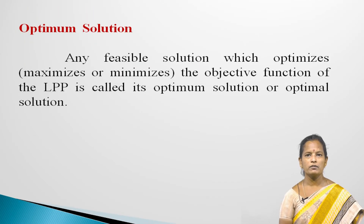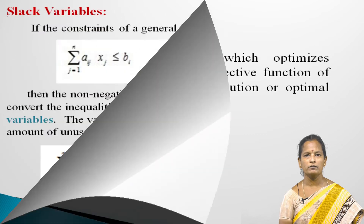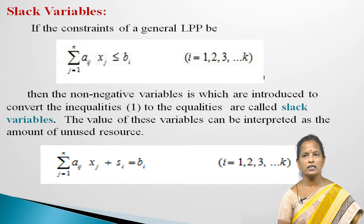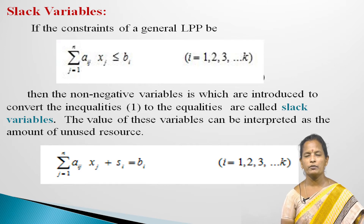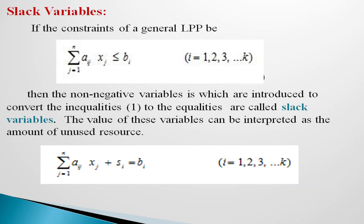Optimum Solution: Any feasible solution which optimizes — that is, maximizes or minimizes — the objective function of the LPP is called its optimum solution or optimal solution. Slack Variables: If the constraints of the general LPP are of the form summation aij xj less than or equal to bi (i from 1 to k, j from 1 to n), then the non-negative variables si introduced to convert the inequalities to equalities are called slack variables: summation aij xj plus si equals bi.